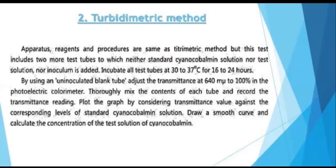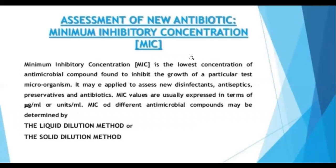These are the methods used for the microbiological assay of vitamins. Next, for the assessment of a new antibiotic or antimicrobial, we use the Minimum Inhibitory Concentration, or MIC. MIC is the lowest concentration of an antimicrobial compound found to inhibit the growth of a particular test microorganism. This may be applied to assess new disinfectants, antiseptics, preservatives, and antibiotics.